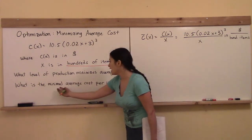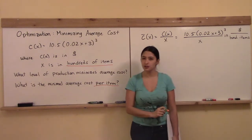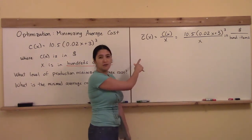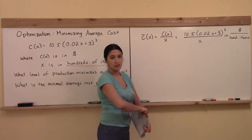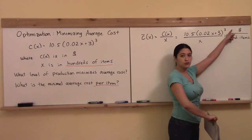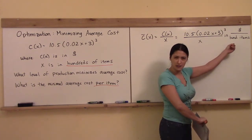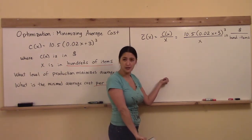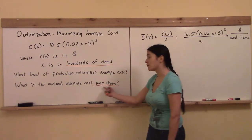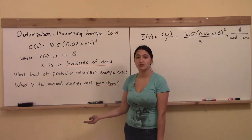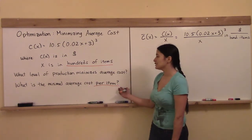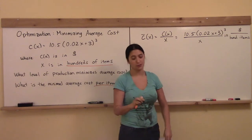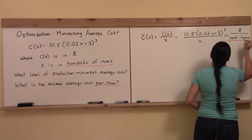The other question is: what is the minimal average cost per item? That's another tricky spot because they want to know what is the minimum that I can make each single item for. When I form the average cost function — the ratio of total cost divided by the number of items — the units carry through as dollars per hundred items. For example, if c-bar of x came out as 5, that would be $5 per hundred items, or 5 cents an item. So when they ask for the minimal average cost per item, we'll have to take the output of the minimal average cost and divide it by 100. x is in hundreds of items, so watch out for the units.